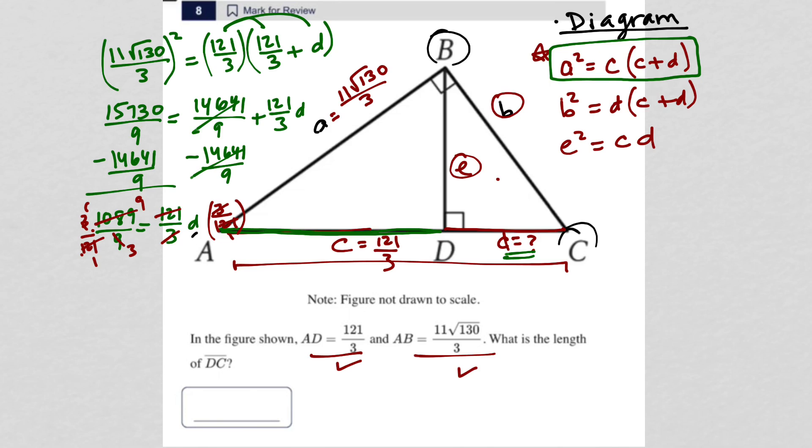These are gone as well. So I'm left with 9 divided by 3 is equal to D, and therefore 3 is equal to D, and therefore 3 is my answer. That is the length of that side there.